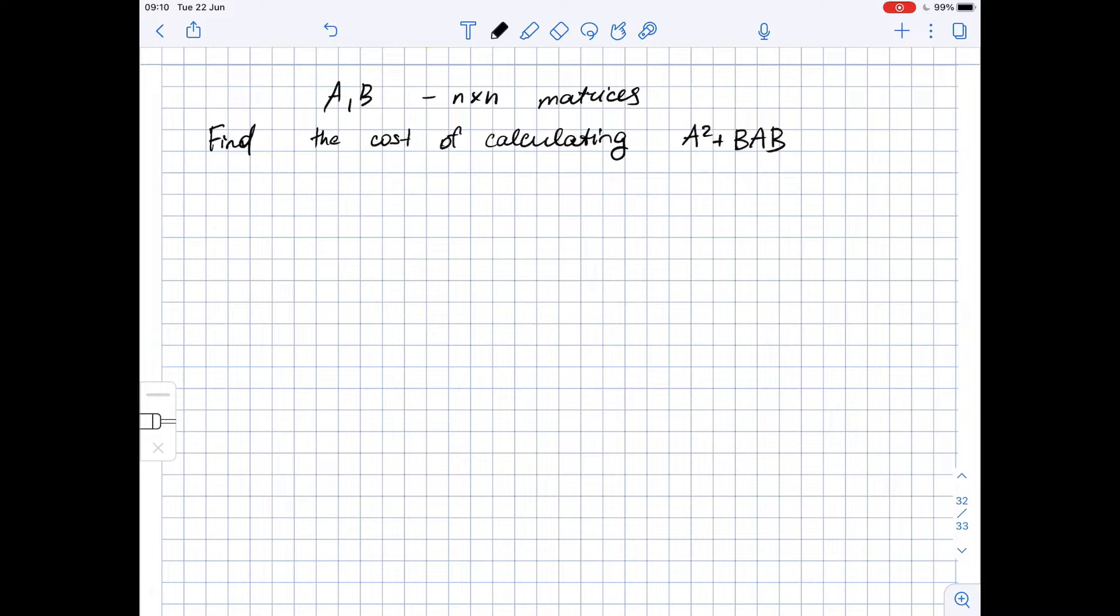Well, let's remember that the cost of multiplying two square matrices of order n by n is n cubed.